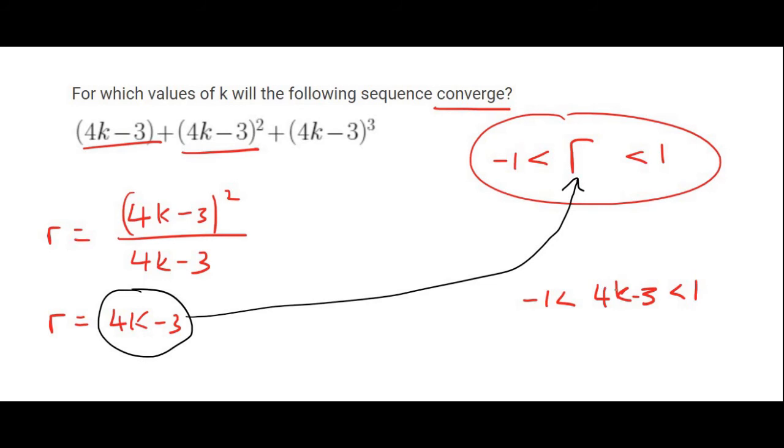Then what we do is we try to get K alone by taking the minus 3 on both sides. And that's going to give us 4K is smaller than 4 on that side and positive 2 on that side. We then divide by 4, and so that's going to give us K is less than 1 and K must be bigger than a half. And so that is the final answer.